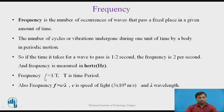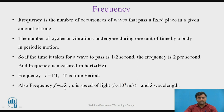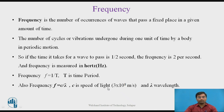Frequency is also related to wavelength. The formula is f = c/λ, where c is the speed of light and λ is the wavelength. The speed of light is 3 × 10⁸ meters per second in vacuum. This value is different in different media; it depends upon the transmission medium. The standard value given here is for vacuum.